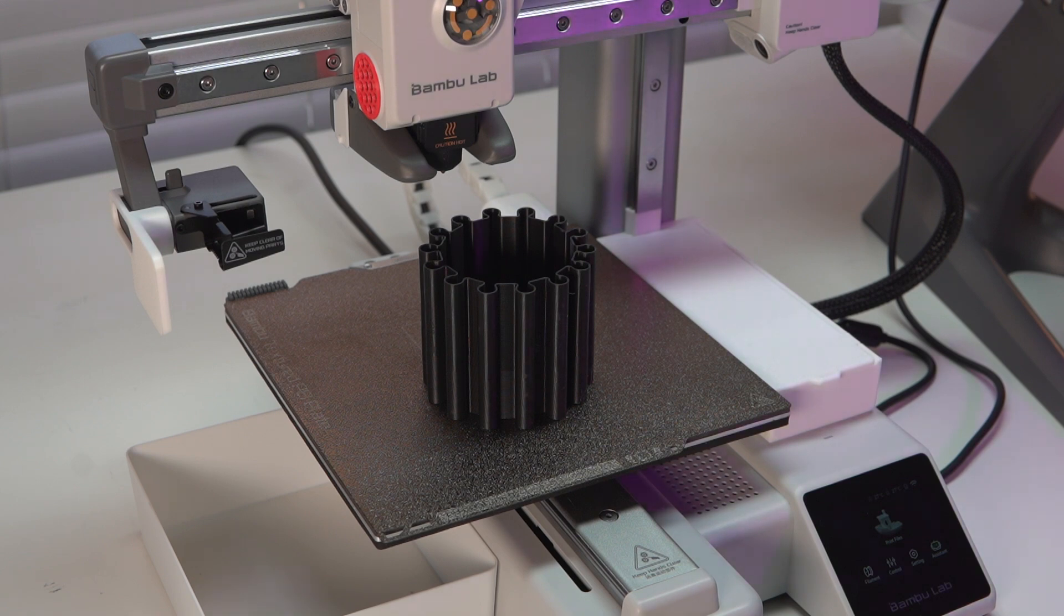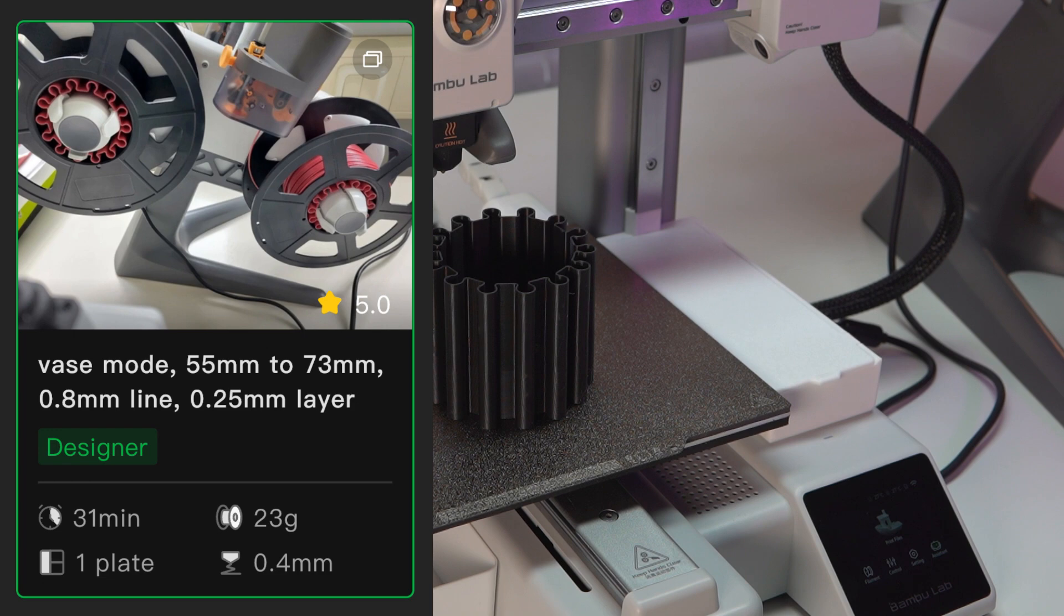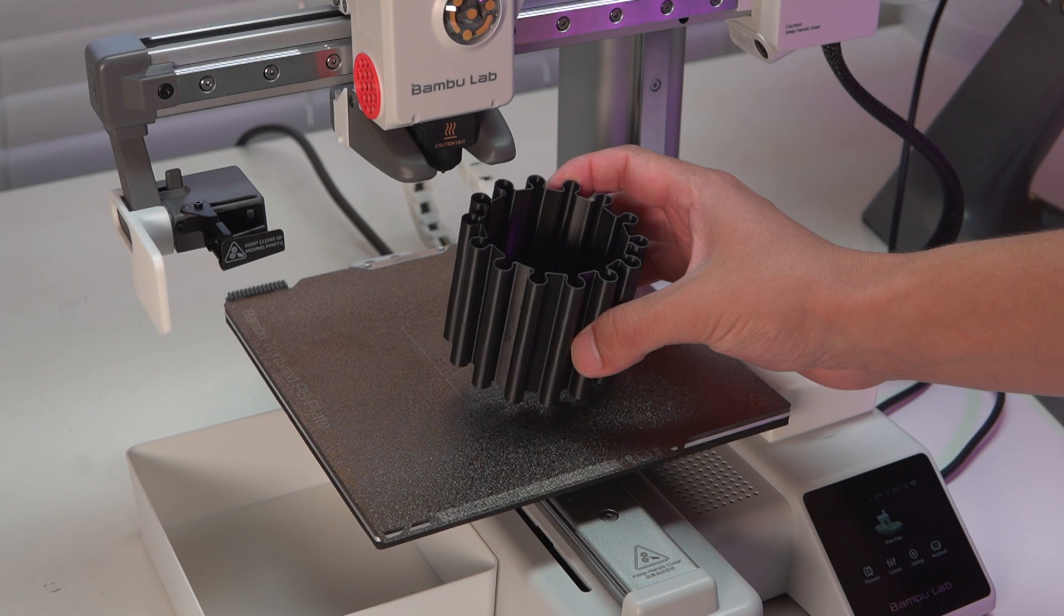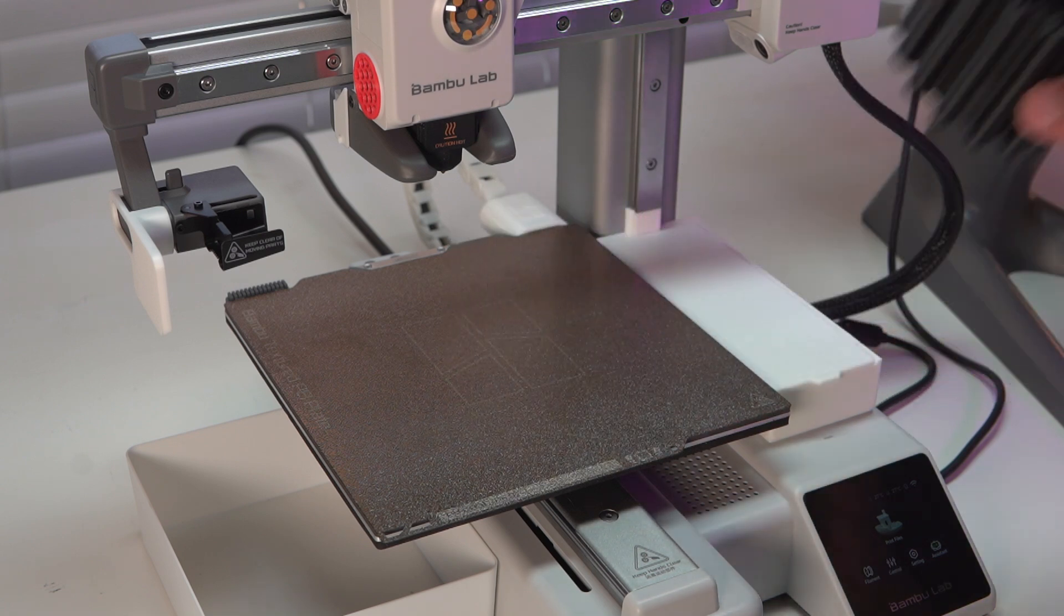We are going to be breaking the 30 minute mark with our next print right here. This thing takes a total of 31 minutes and 23 grams of filament, and it's actually printed in vase mode which is just kind of interesting. This right here is going to be used on our AMS light system, so if you don't have the AMS system you can just go ahead and skip this one.